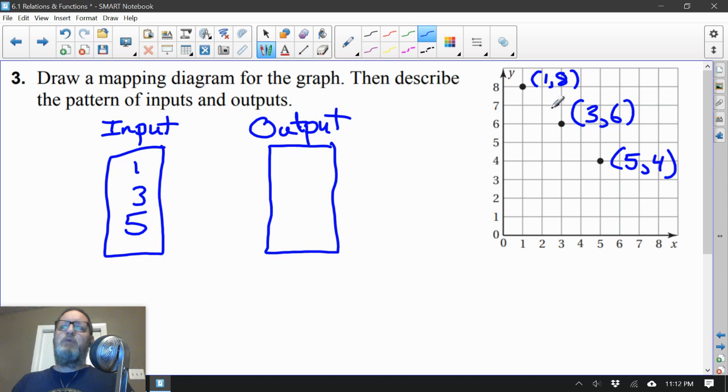And those are going to be our y values. So 1 went with 8, 3 went with 6, and 5 goes with 4. Throw our little arrows here showing which number pairs up with the other. There we go.